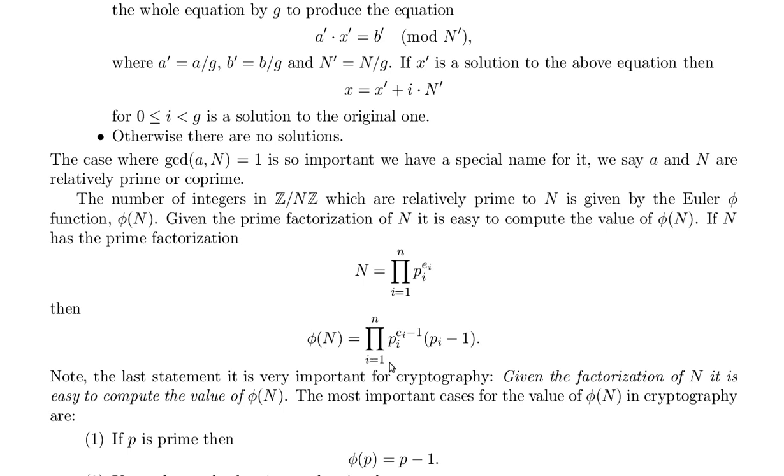So you have to understand this pi symbol is multiplication to begin to unpack that notation. Then phi of n equals the product over the indices i equals 1 to n of p sub i to the e sub i minus 1 times p sub i minus 1.